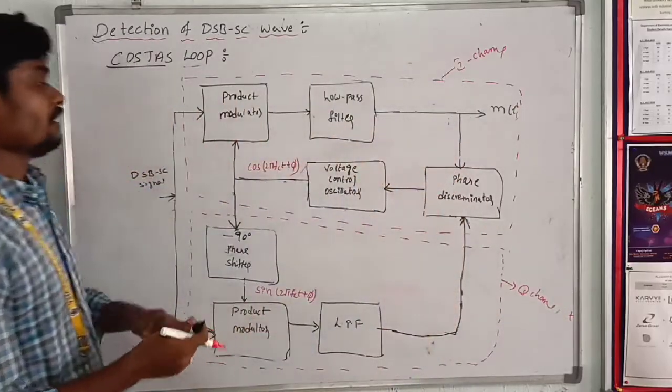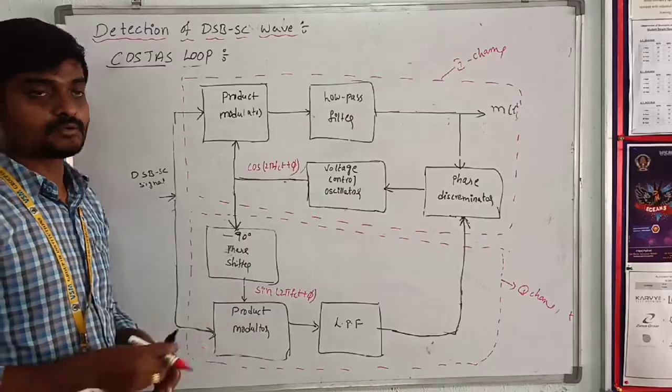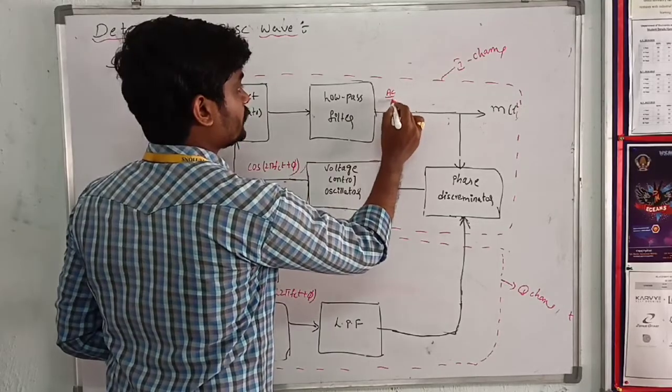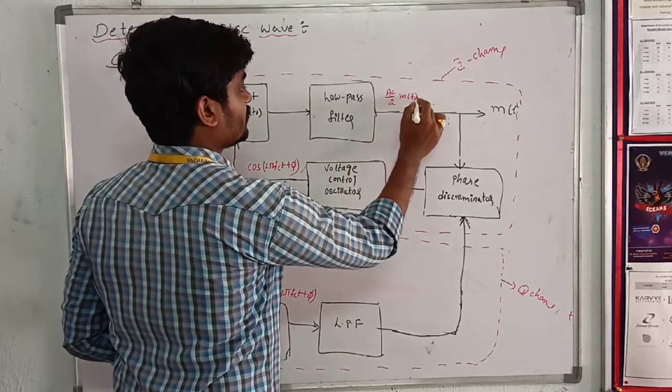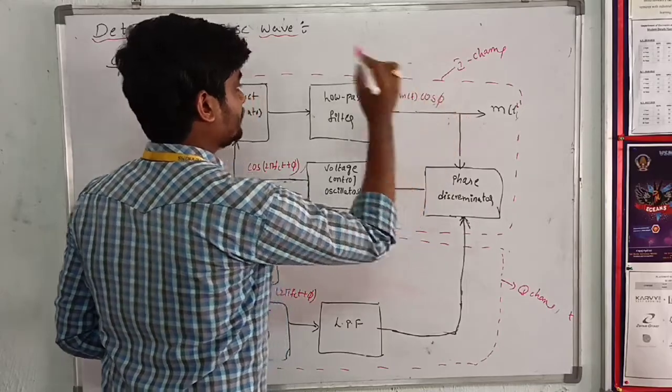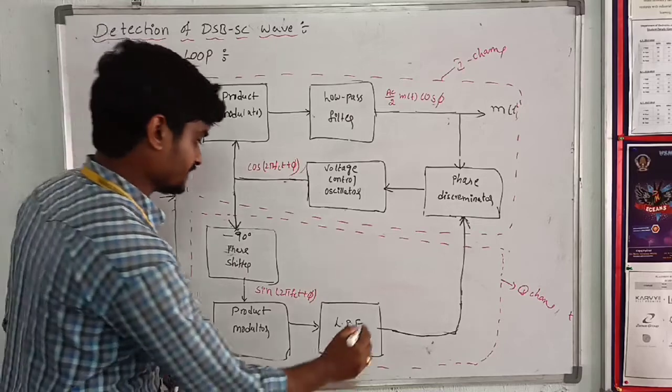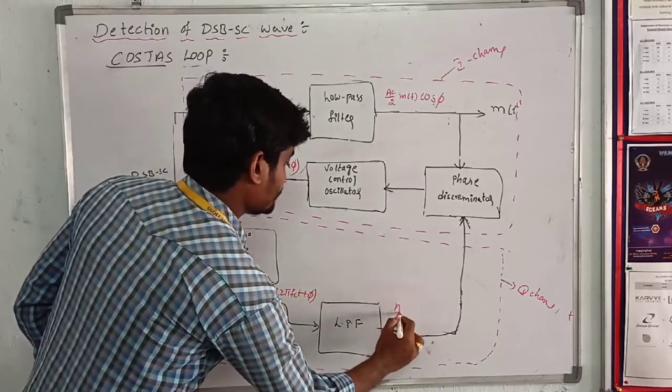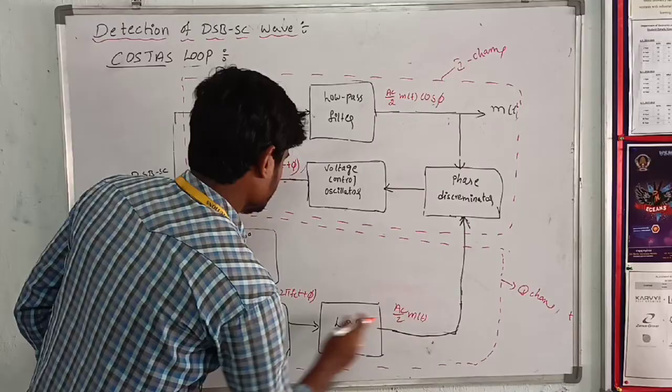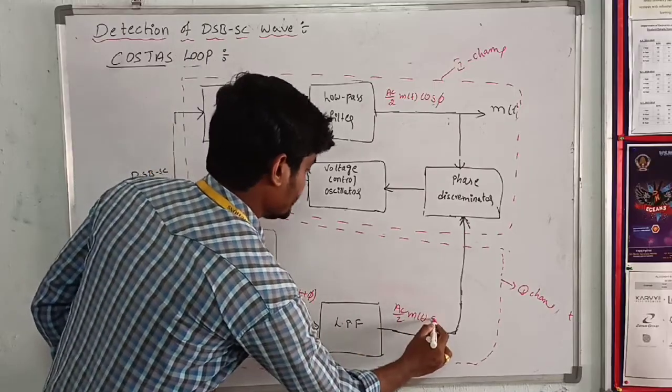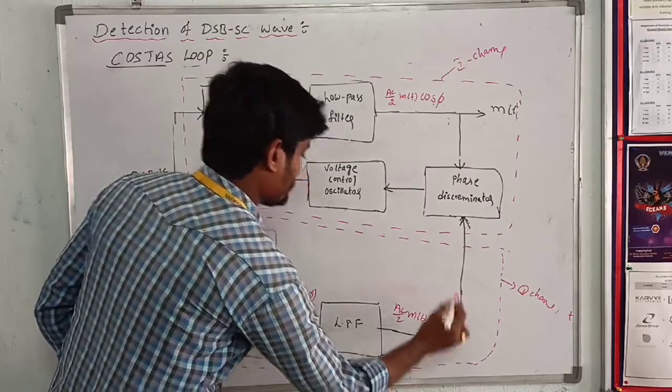The output of the I channel coherent detector is Ac/2 m(t) cos(φ). And the output of the Q channel is Ac/2 m(t) sin(φ).